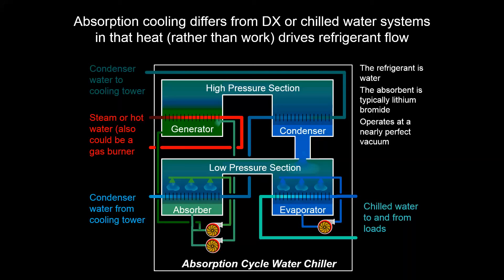So instead of work being input into a compressor, you have heat being added to a generator. That's why if you have waste heat, it can be advantageous to have something like an absorption chiller on site to be able to generate cooling from waste heat. But other than that, we're going to see a lot more commercial cooling applications with typical vapor compression chillers or DX units. If you have any comments or want more discussion on absorption cooling or any examples or exercises, please let me know in the comments section.